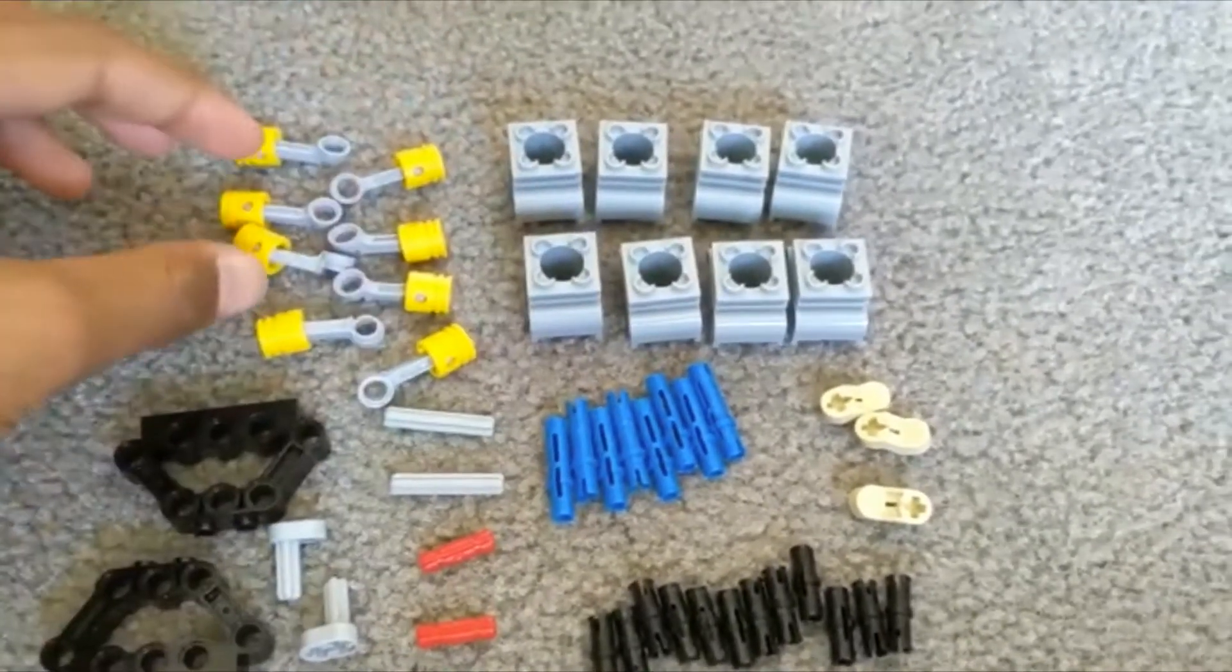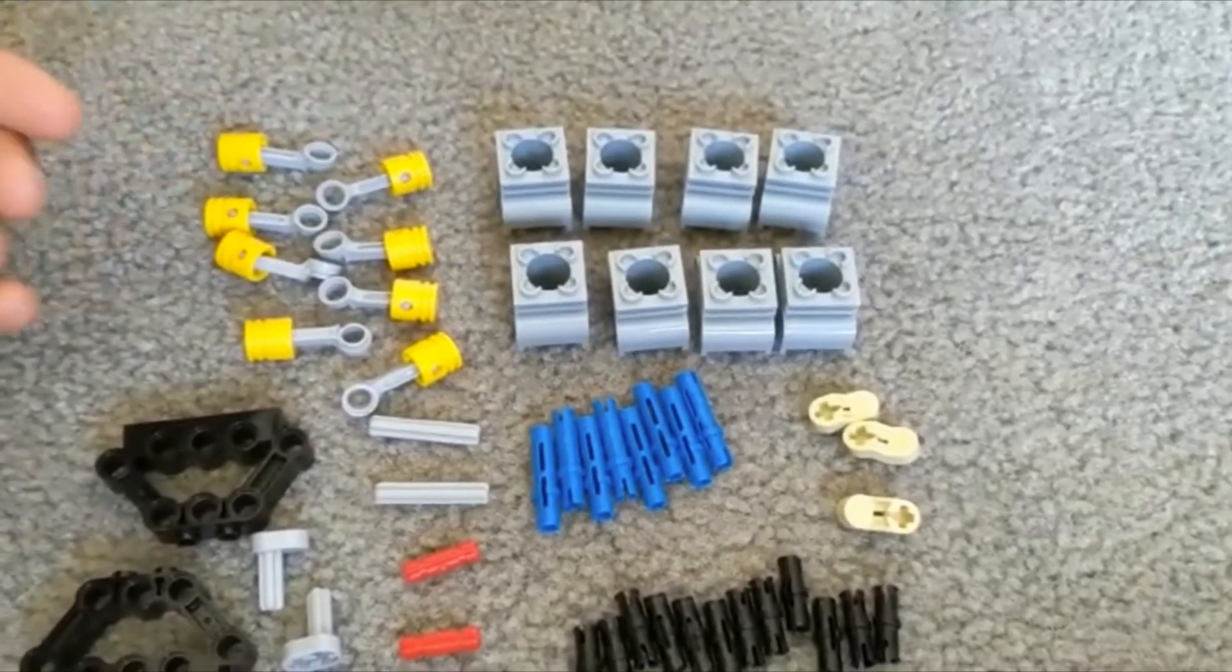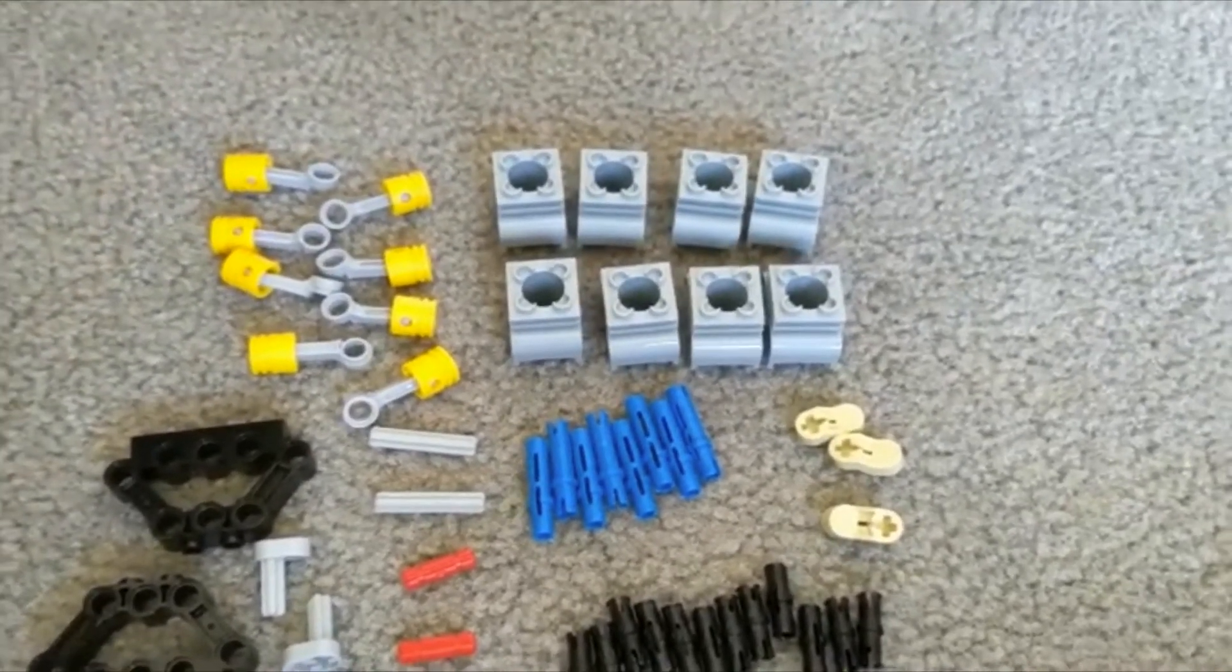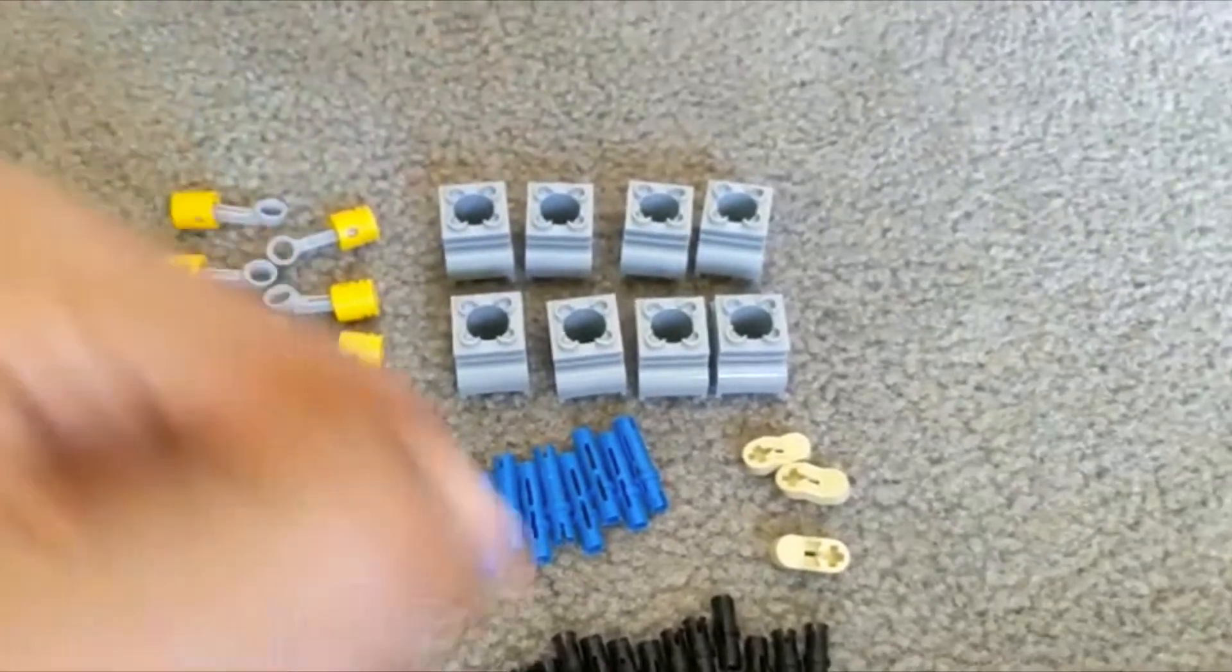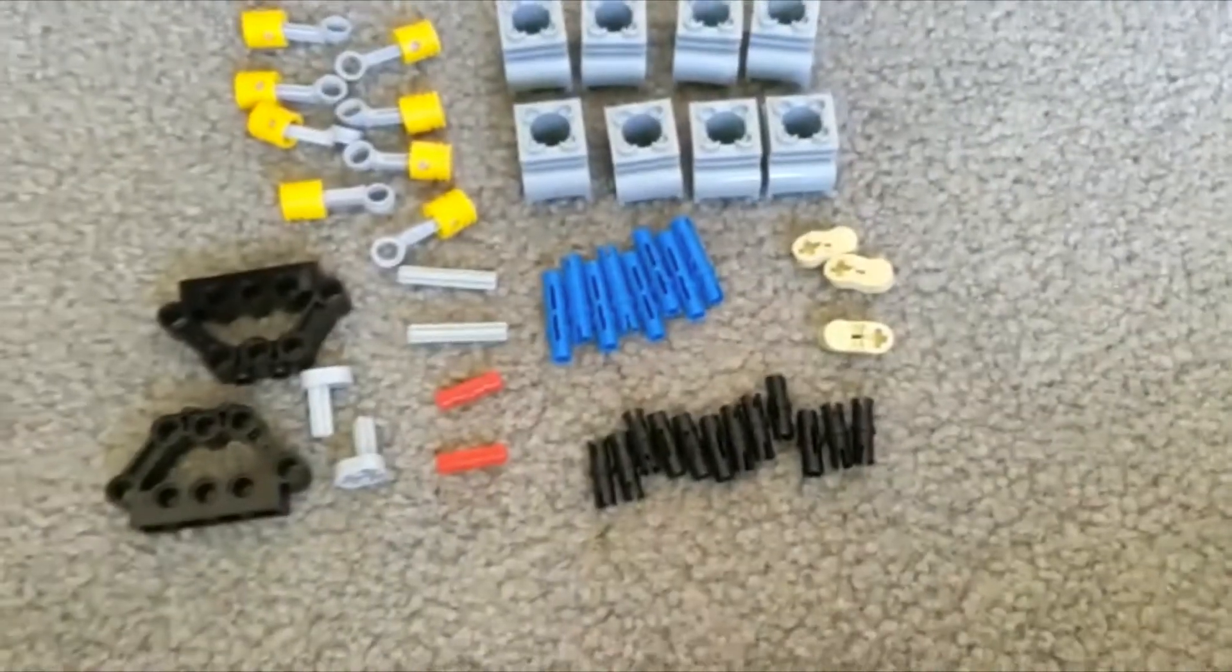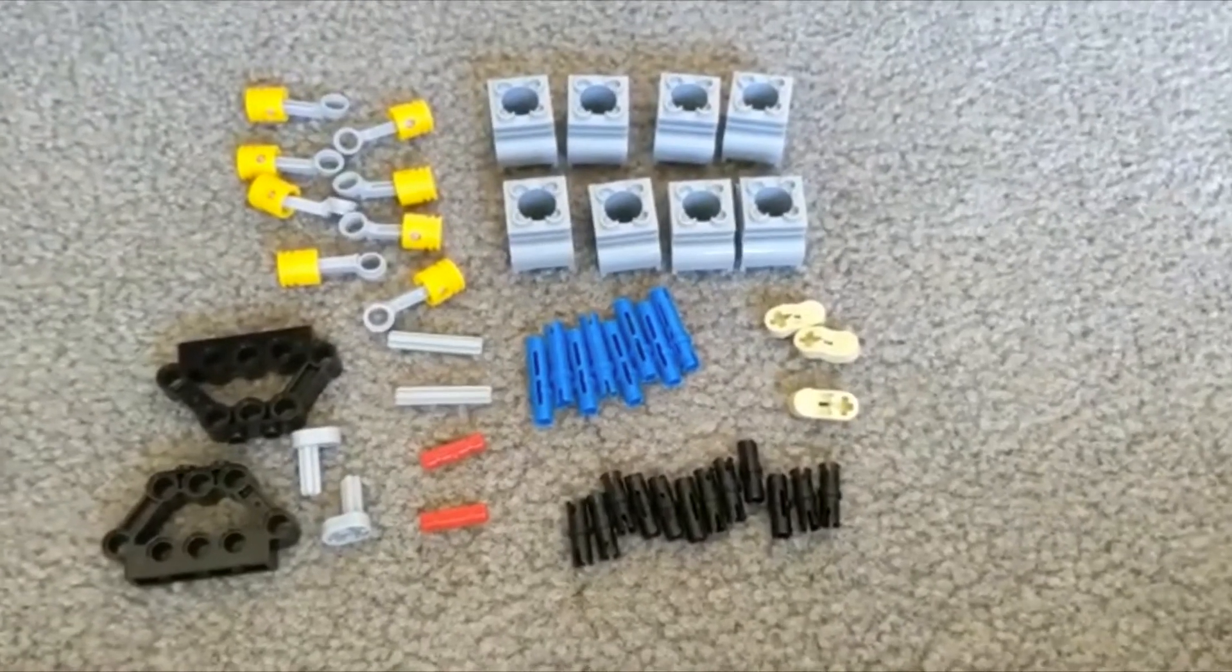We have 8 of each of these because we're making a V8 engine. If we were to make a V6 engine or a V4 engine, we would have 6 and 4, respectively. So let's get on to the step-by-step instructions.